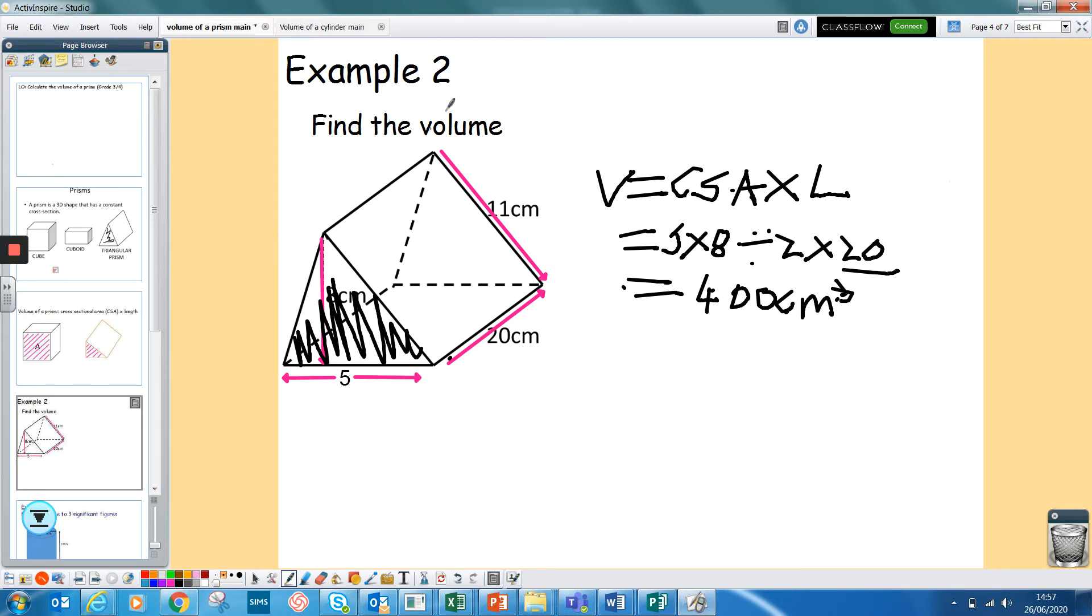That's 400 centimeters cubed. So remember, you find the area of the triangle, base times height divided by 2, times it by how long it is, which was my 20 bit there. So you can get lots of different shapes. If you watch this bit again if you're unsure on how to do one like with a triangular prism.